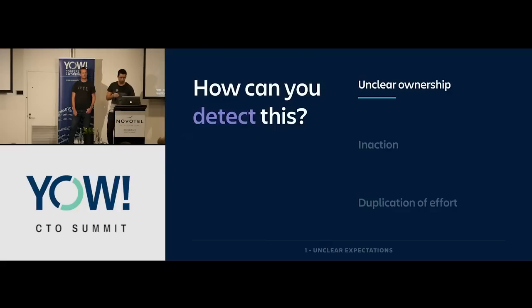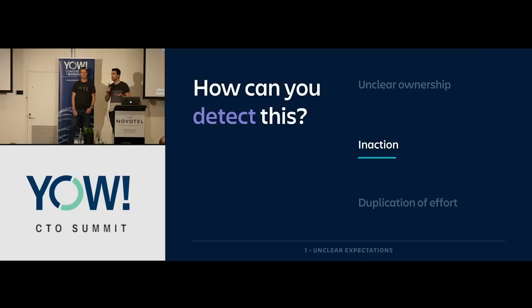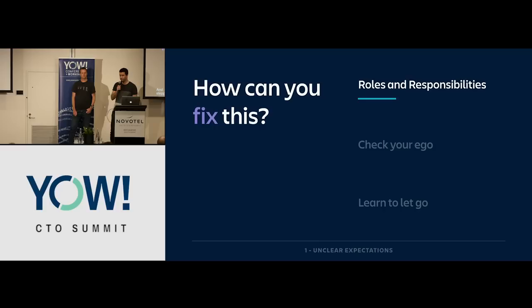A few things to look out for in your own leadership team: is there unclear ownership between you and others? Do you or others take on more than you should? Do you find yourselves dropping the ball in certain areas, or duplicating effort and stepping on each other's toes? If those symptoms ring true, the first tip is to run what we call a roles and responsibilities play with your leadership team to help root out the problems.